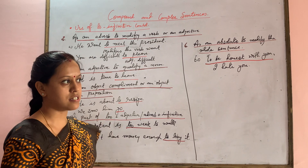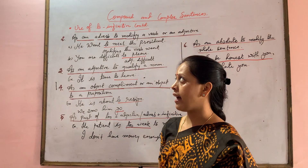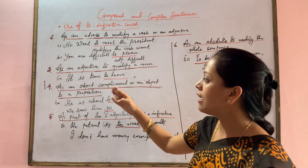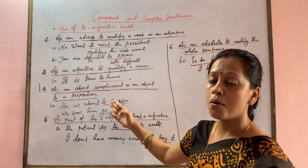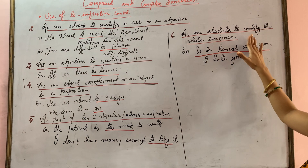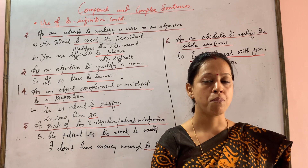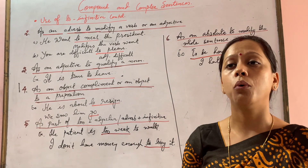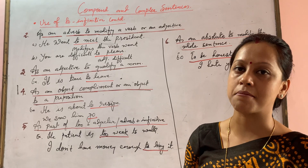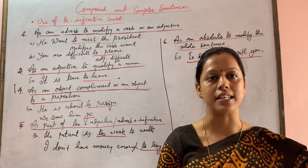So, there are six uses of the to-infinitive. In part one I explained its use as a noun. Here we have seen: as an adverb to modify a verb or adjective, as an adjective to qualify a noun, as an object complement or object to a preposition, as part of 'too + adjective + infinitive,' and as an absolute to modify the whole sentence. We will be moving into gerund and participle in part three. If you like this explanation, please like and subscribe to my channel. Thank you.